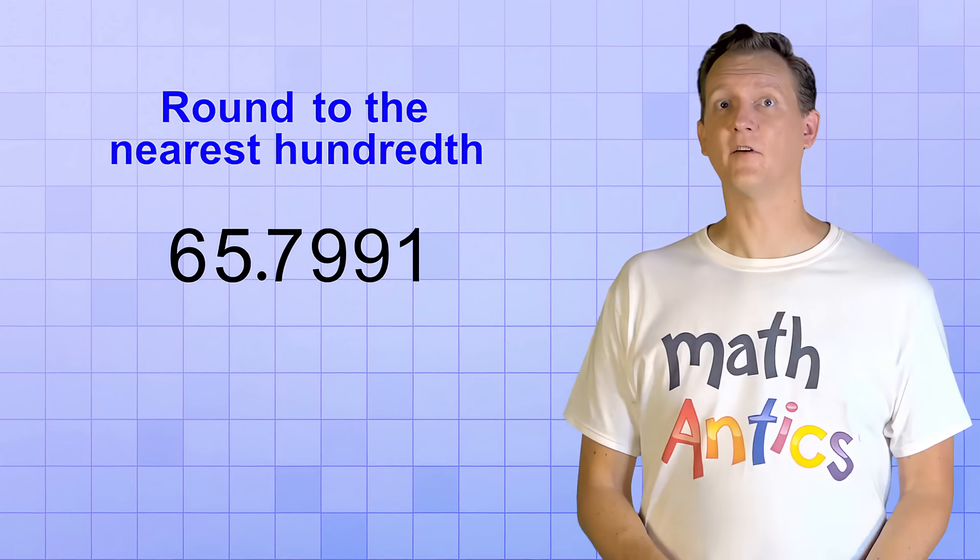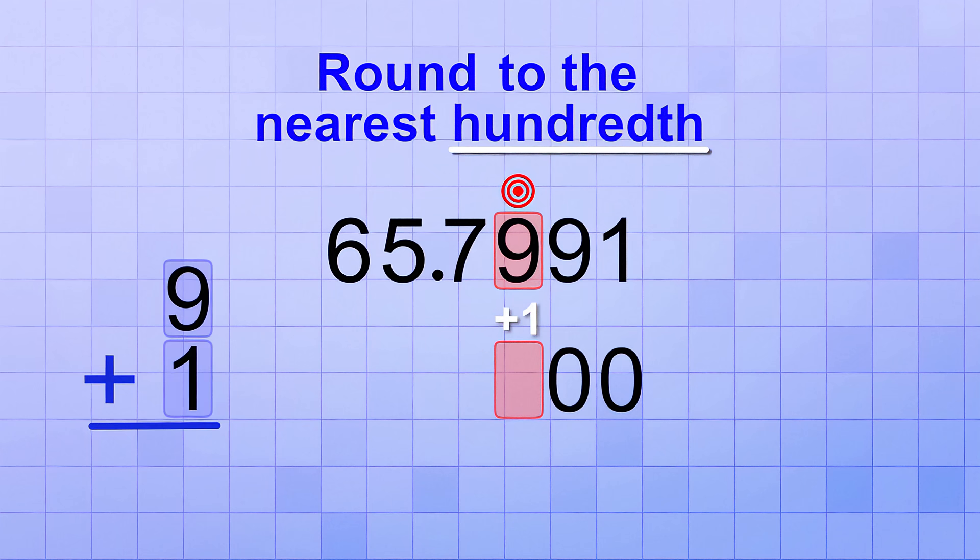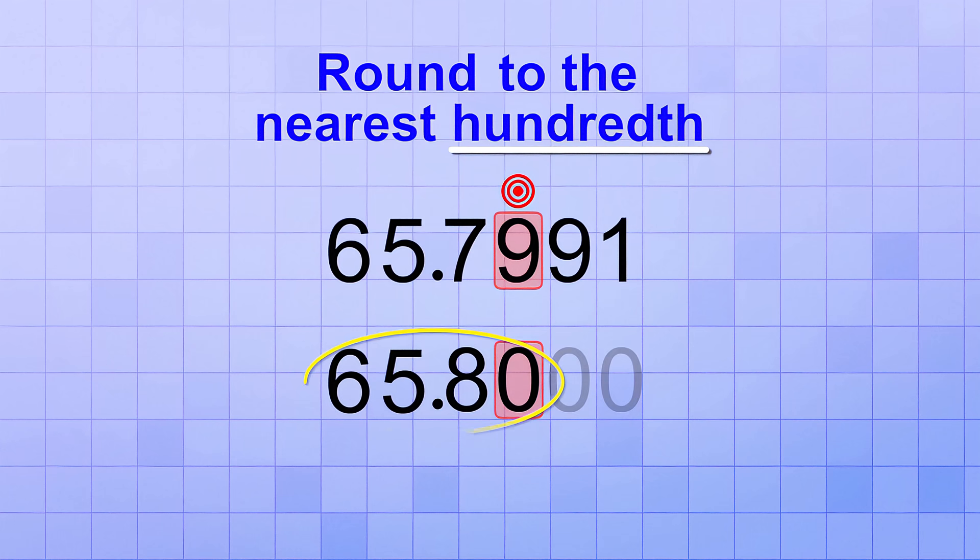Ready for one more? Let's round 65.7991 to the nearest hundredth. The first step is to identify the hundredths place as our target. That place contains the digit 9. All the digits in smaller number places will just be replaced with 0 in the rounded version. Next, we need to decide if we leave the target digit the same or increase it by 1. So we look at the digit to the right of the target. It's a 9 also, so we'll definitely be rounding up. But since the target digit is already a 9, raising it by 1 is a little more complicated. When you add 1 to a digit that's already 9, you need to change it to 0 and increase the digit in the next bigger number place by 1. So that means that our target digit will become 0, and we need to increase the digit in the next bigger number place. That digit is a 7, so we'll increase it to an 8. The rest of the digits in the original number will be kept the same in the rounded version. So our rounded version will be 65.80.